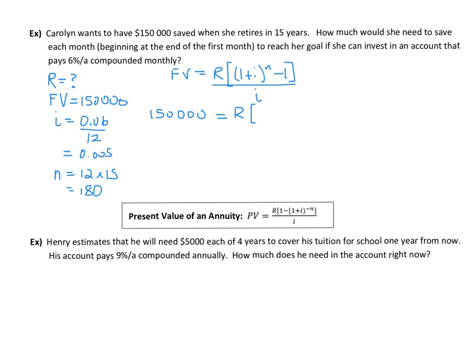In our bracket here we're going to have 1.005, so I just did the adding part with that. 180 is our exponent. Then we subtract 1 from that answer and that gets divided by 0.005.